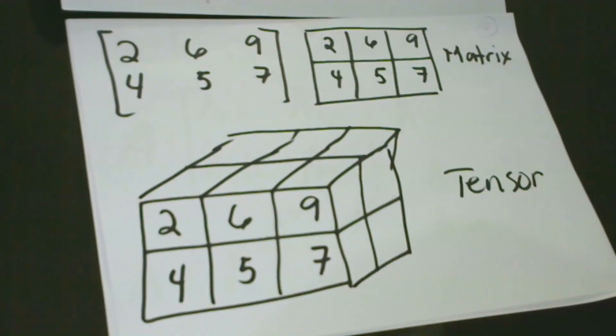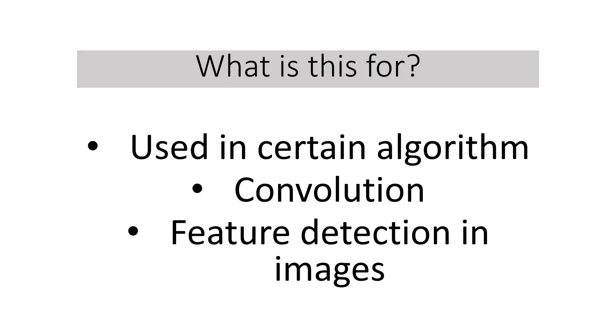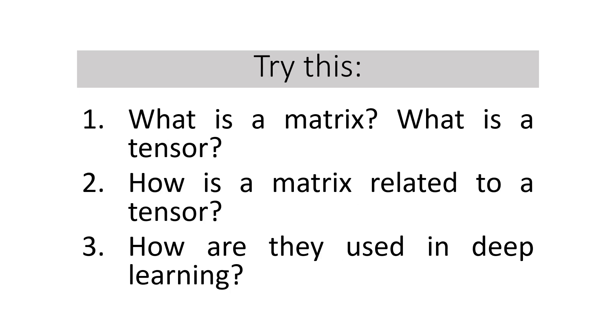We have already covered the basics of scalar, vectors, and tensors. So, we are going to go to the next level of difficulty in our next lesson. You would like to ask, what is this for? Tensors and matrices are not that really useful in all aspects of deep learning. They are used in certain algorithms. For example, convolutions and other operations are commonly used when working with vectors and matrices. This is especially used for feature detection in images. After all being said and done, let's try this. What is a matrix? What is a tensor? How is a matrix related to a tensor? How are they used in deep learning?